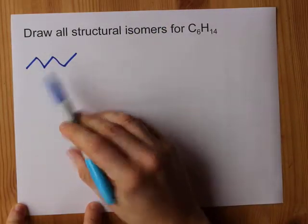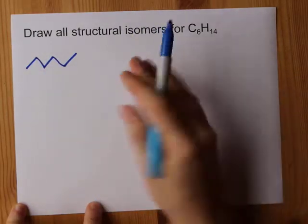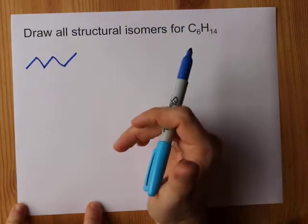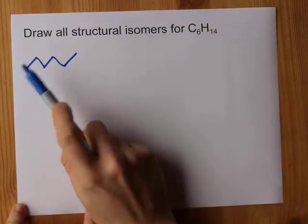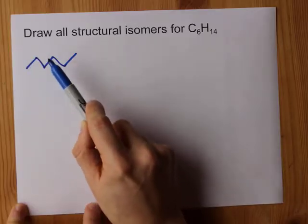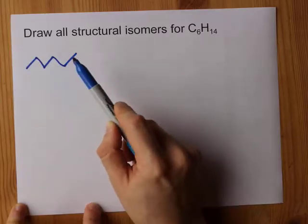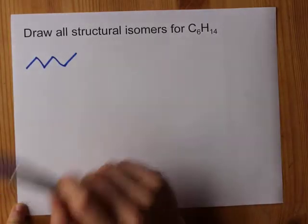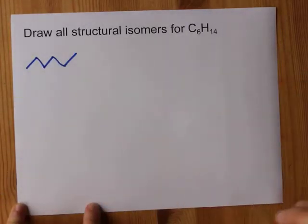This is six carbons in a row saturated with hydrogens — one, two, three, four, five, six carbons all in a row.